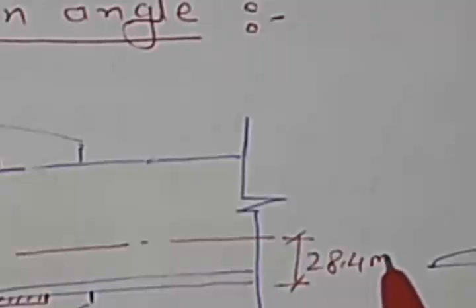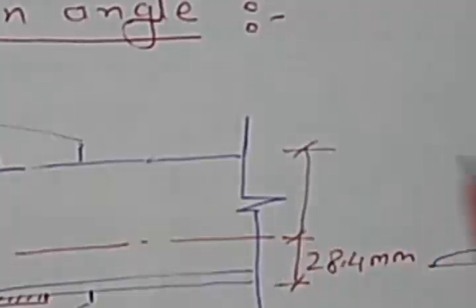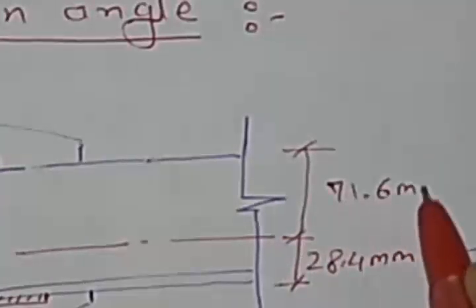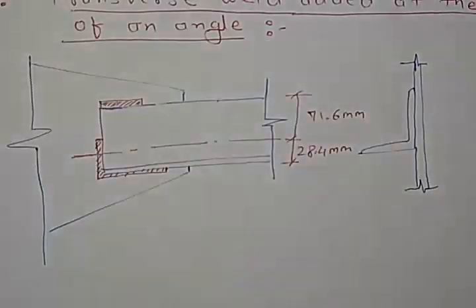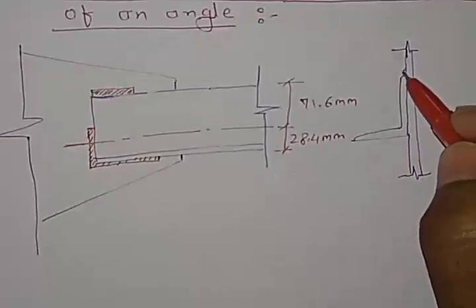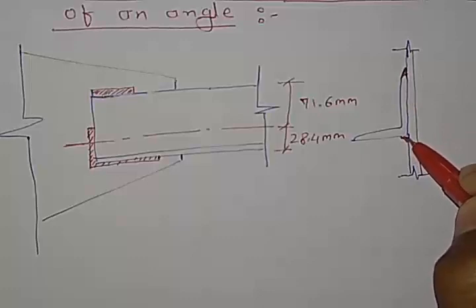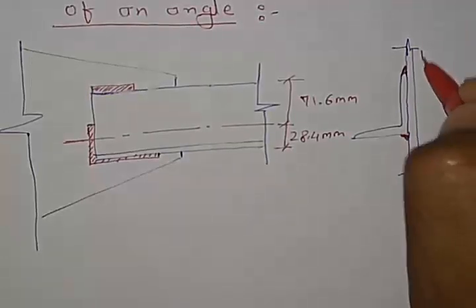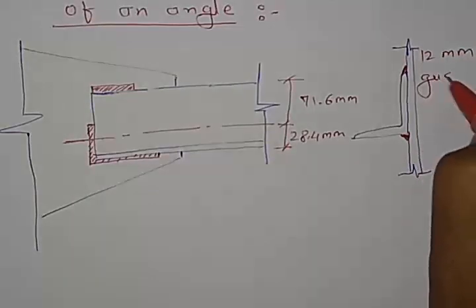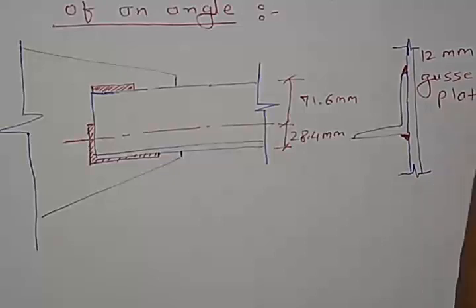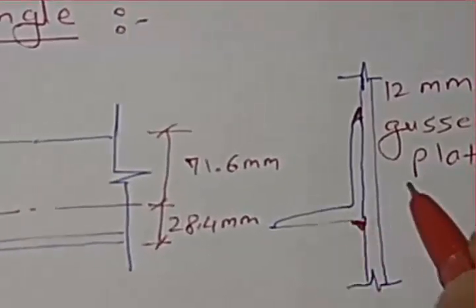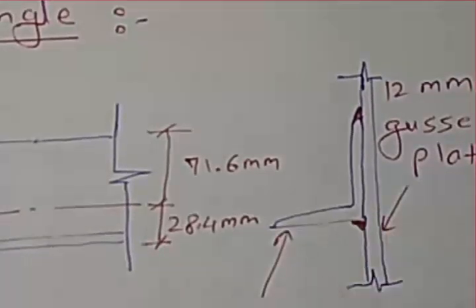This is 28.4 mm and the remaining distance would be 71.6 mm. So this is 28.15 mm and we can just say this is going to be the weld. This is 12 mm and the seat plate. This is 12 mm and the seat plate. This is your angle section 100 by 100 by 10 mm.